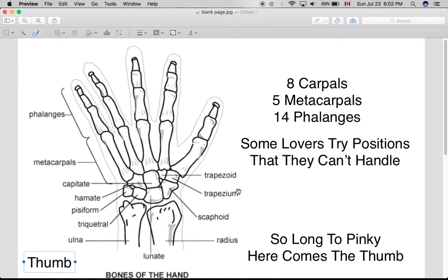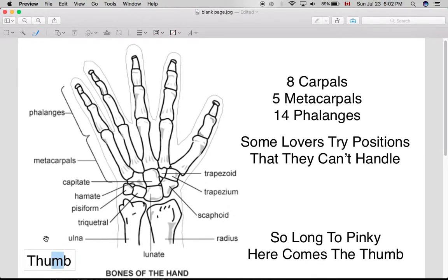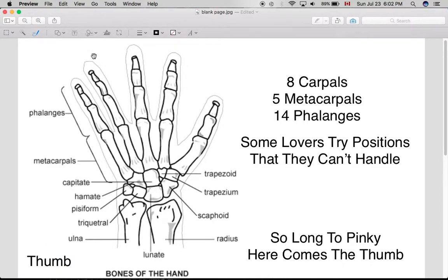Now people also can't really distinguish between the trapezoid and the trapezium. So if we remember the thumb has an M inside of it, we can also see that trapezium also has an M in it, which trapezoid doesn't. So we remember that the trapezium is closer to the thumb than the trapezoid is. It's easy to remember.